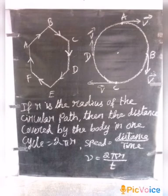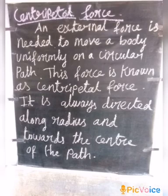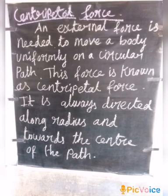The circumference of the circle is 2πr. So the speed is equal to 2πr by t. In circular motion, centripetal force is required. An external force is needed to move the body uniformly on a circular path. This force is known as centripetal force.